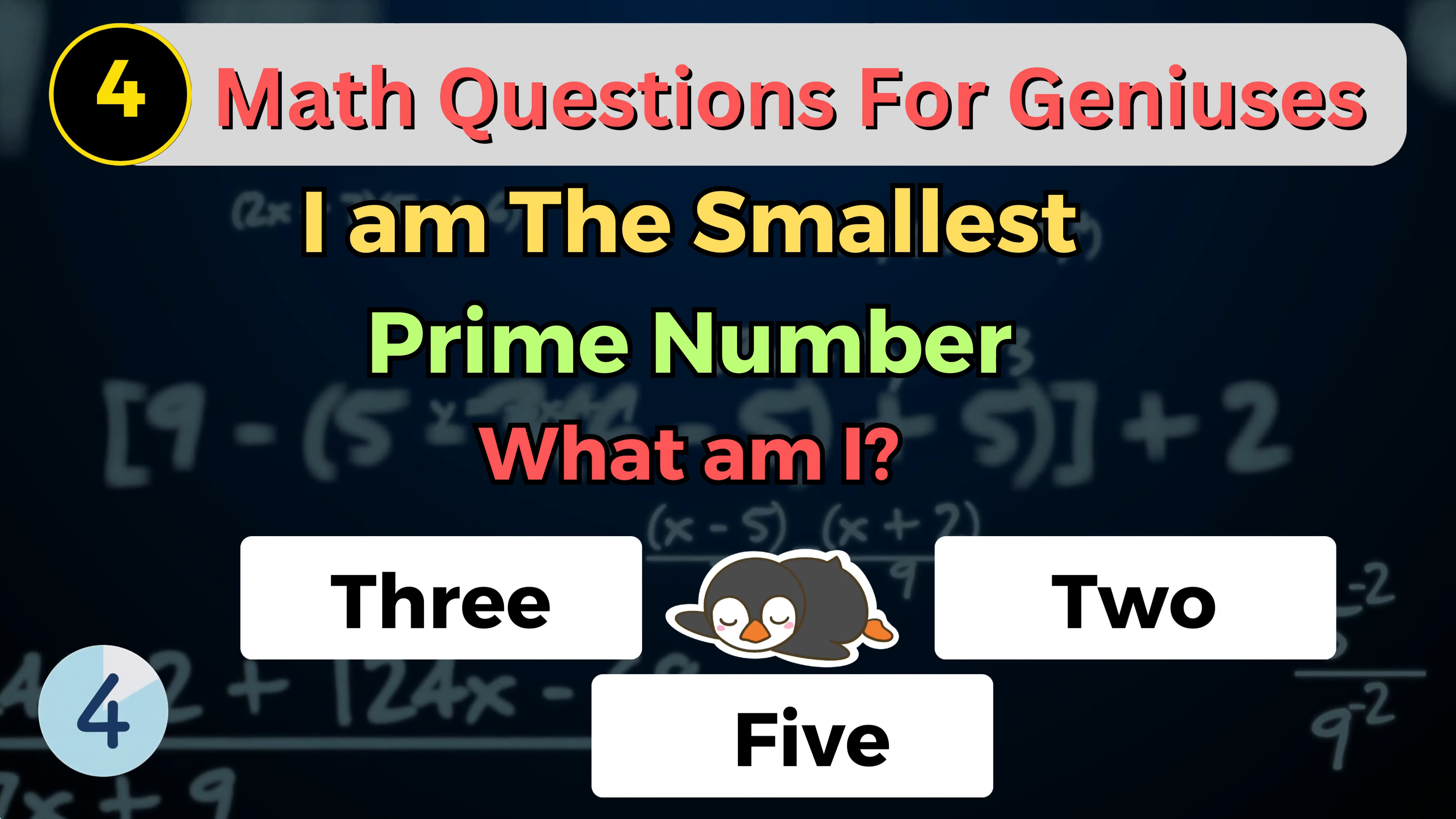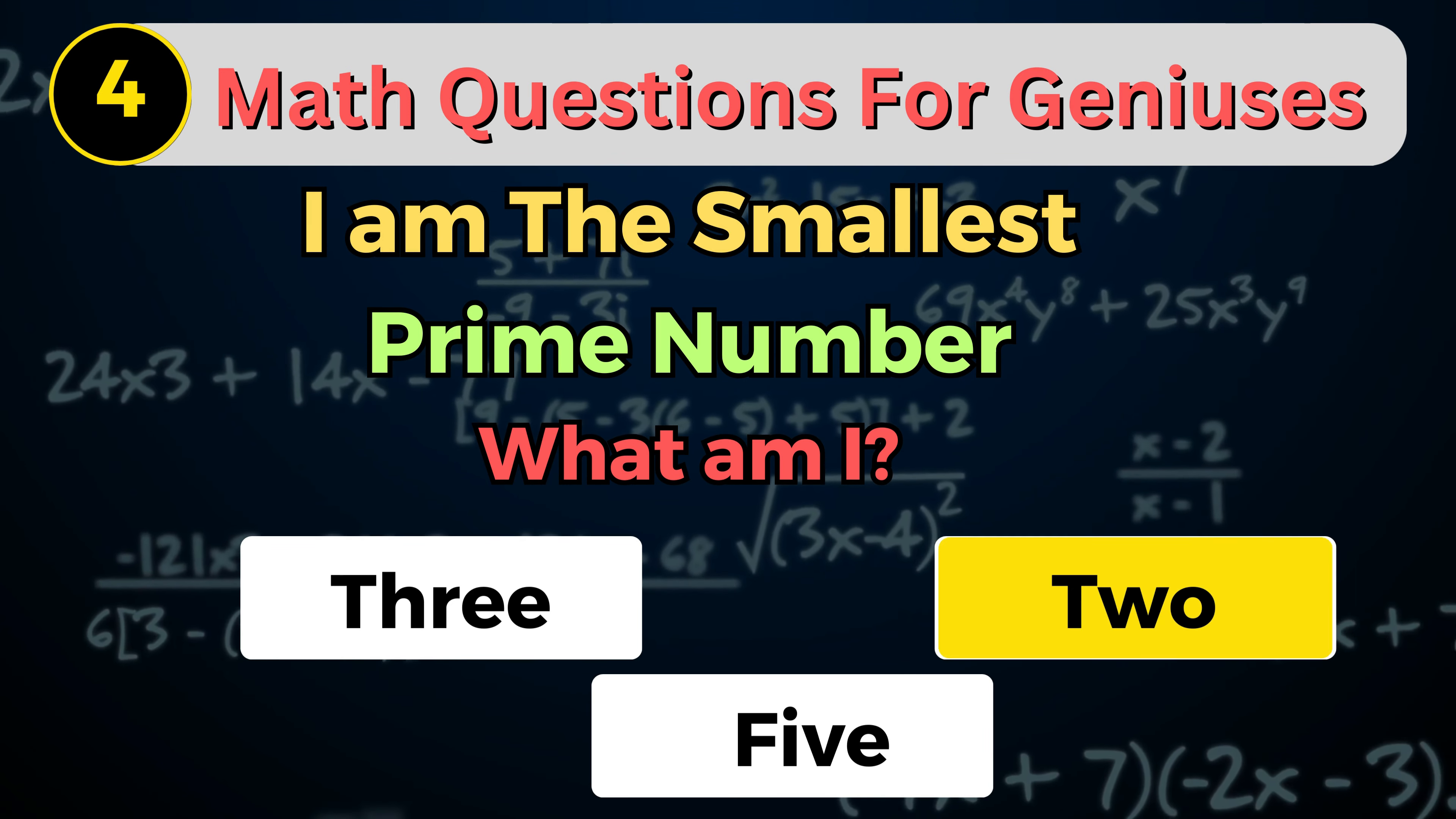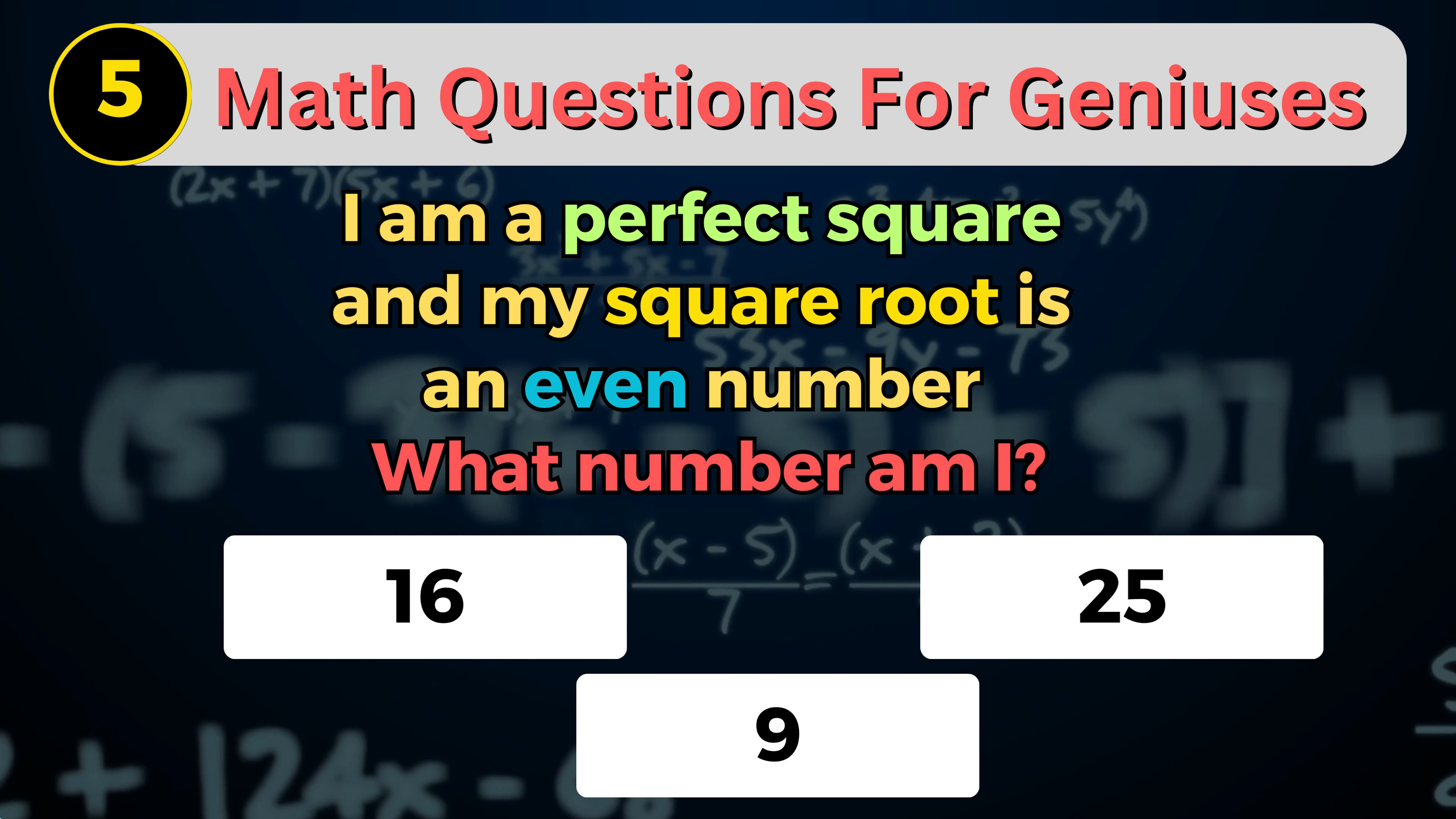Number 5. I am a perfect square and my square root is an even number. What number am I?